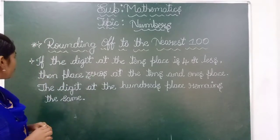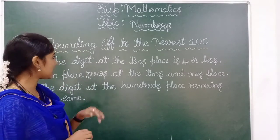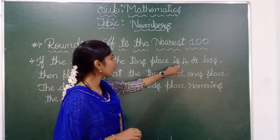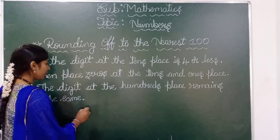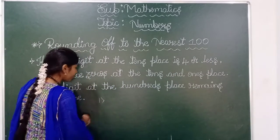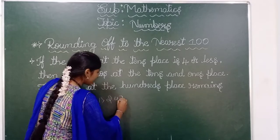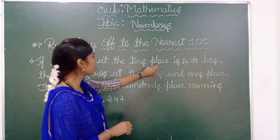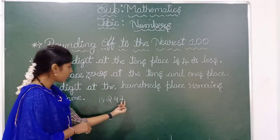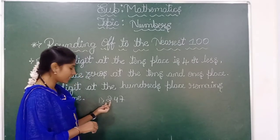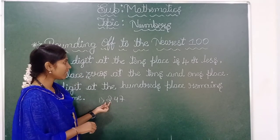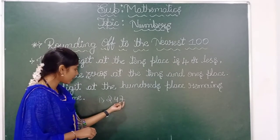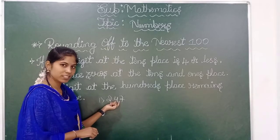So what is the first rule for rounding off to the nearest hundred? The condition is: if the digit at the tens place is four or less. So if I take the example 247 — here the digit at the tens place is four or less. So this is the ones place, this is the tens place, and this is the hundreds place. The tens place digit is four here.